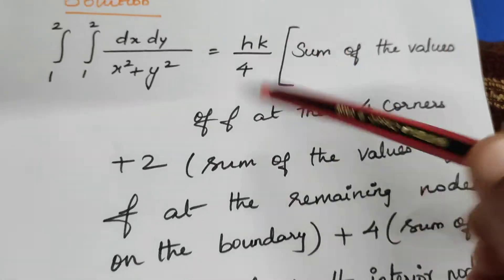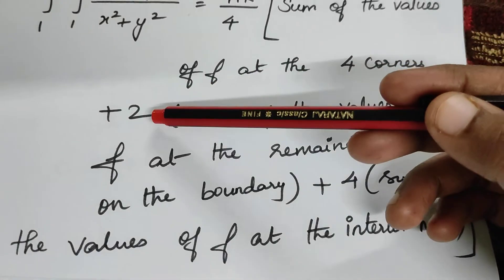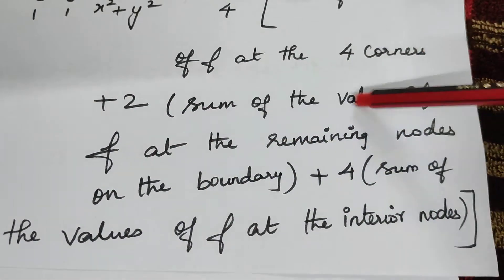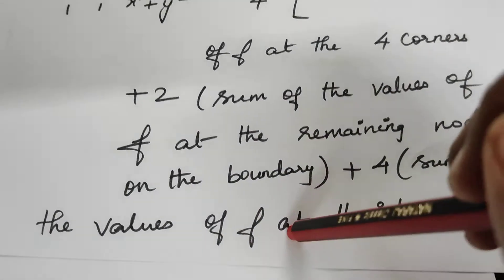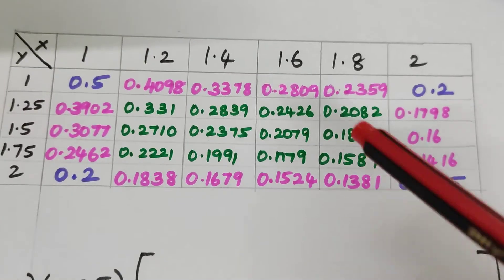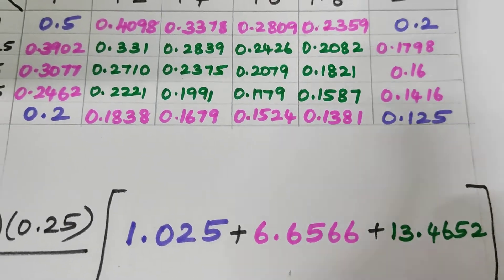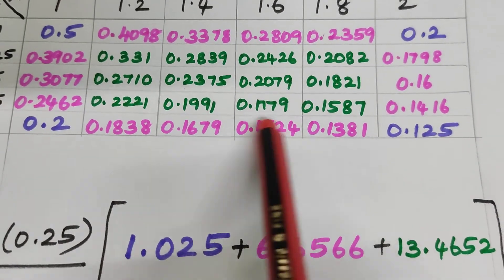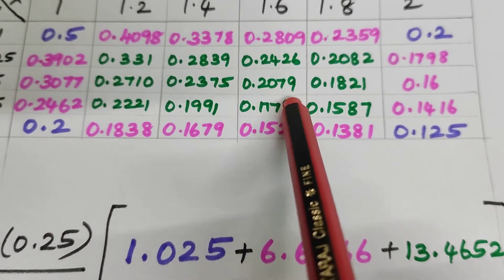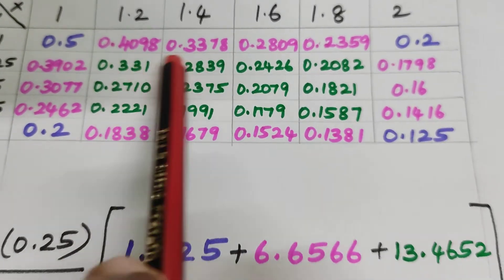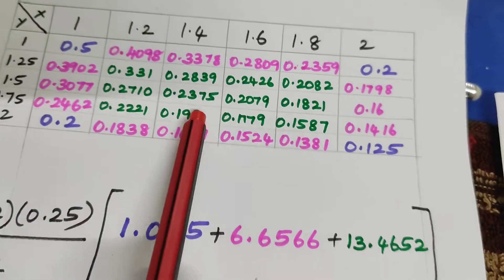Let us get back to the formula again. We have substituted H, K, 4, sum of the values at the 4 corners and plus 2 into sum of the values at the remaining nodes of the boundary plus 4 times the sum of the values of F at the interior nodes. Interior nodes are the values which are not lying on the boundary. Except the boundary line we will consider all the values. Totally here we are having around 12 values in the interior.